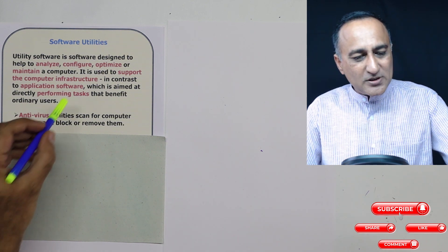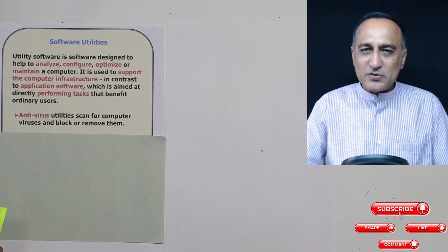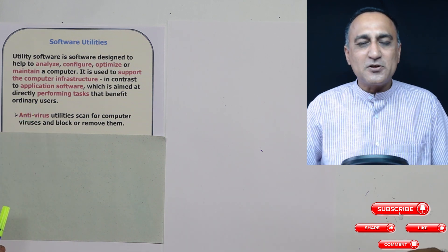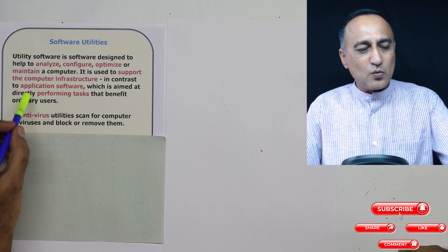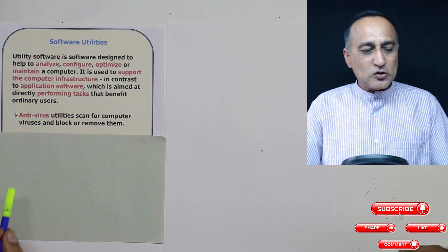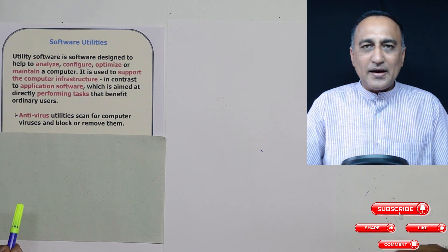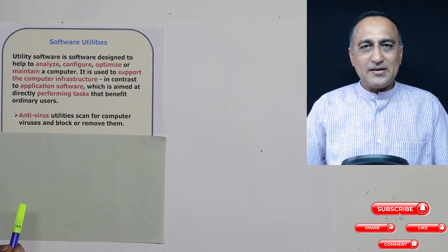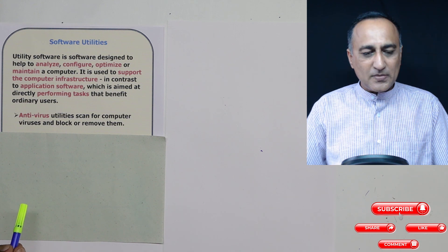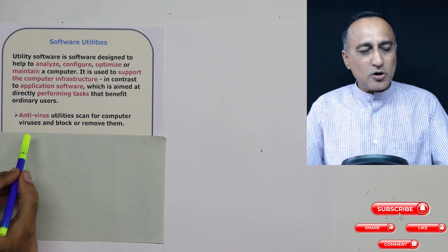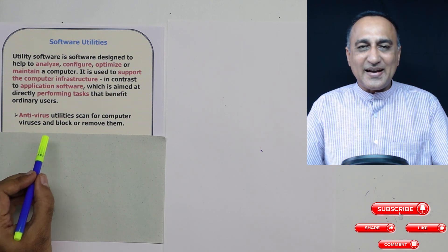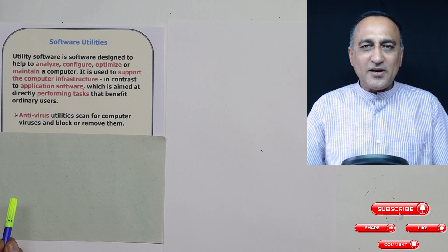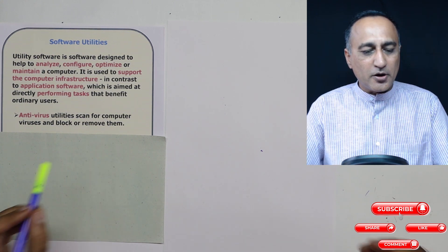First, we'll take a look at different examples of utility software, and then it's very easy to understand what each of this means. Antivirus software is a utility used in a computer whose job is to see that no Trojans, viruses, and other things attack your machine. And if they do, or if you are downloading a file that contains them, it will help you remove them.